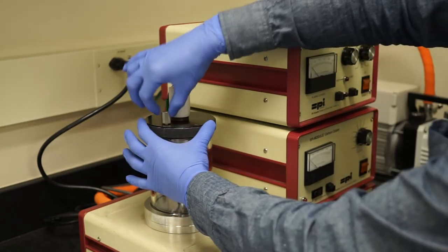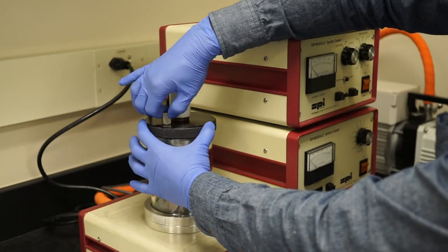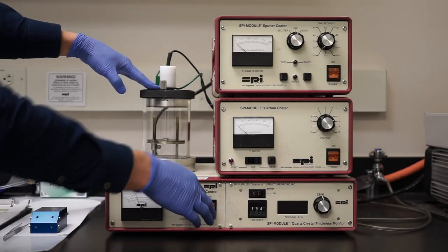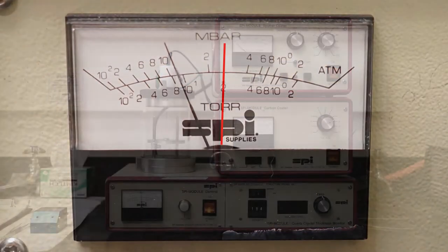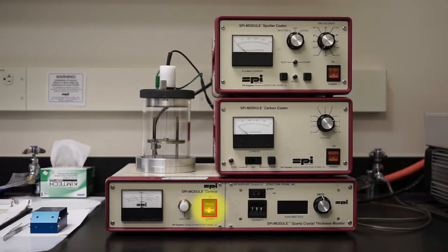Gently tighten the vent knob. Lightly push down the lid and pump the chamber. When the pressure indicator reaches 200 millitorr, power off the control unit.